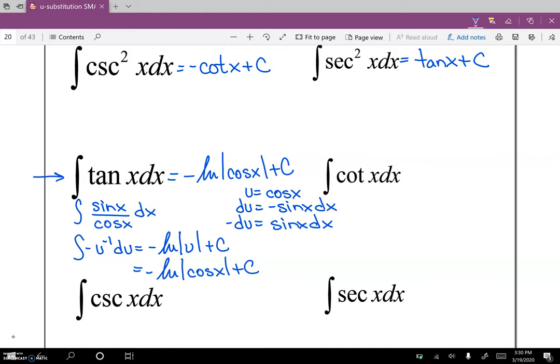And as you can see, cotangent is going to work very similar. Instead of being sine over x, it's cosine over sine of x. And in this problem, we'll let u be the denominator, which is sine of x. The derivative is cosine x dx.